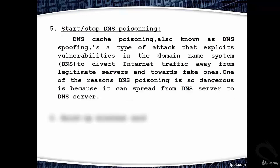Fifth: start or stop DNS poisoning. DNS cache poisoning, also known as DNS spoofing, exploits vulnerabilities in the domain name system to divert internet traffic away from legitimate servers and towards fake ones. It is dangerous because it can spread from DNS server to DNS server. Sixth: boost up the wireless card. That's it for this video on Wi-Fi wireless hacking tools in Kali Linux — thank you for watching.